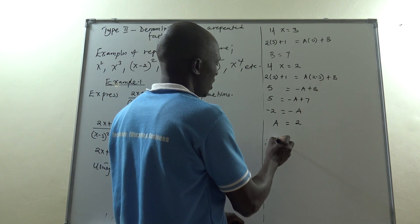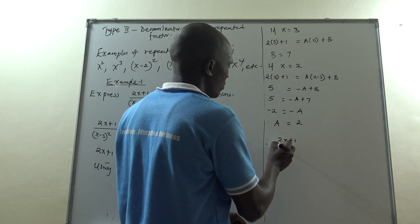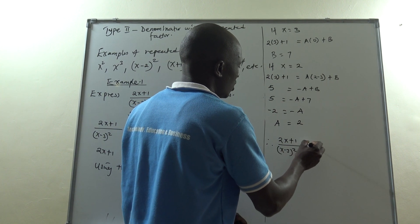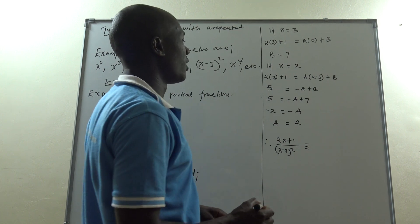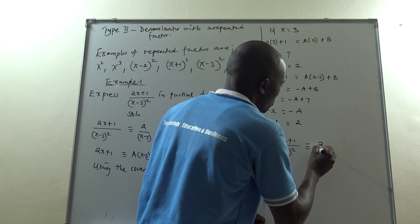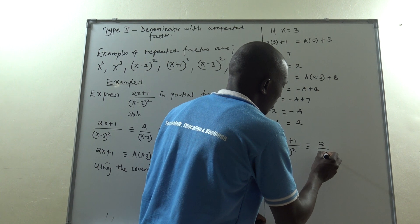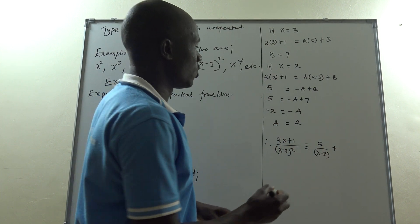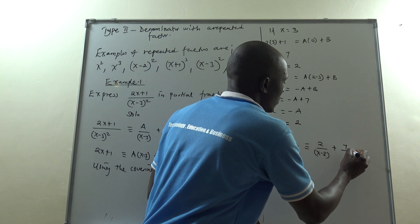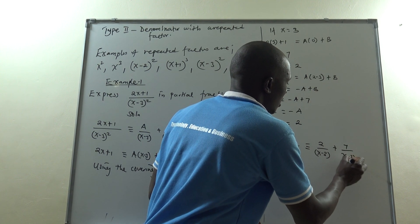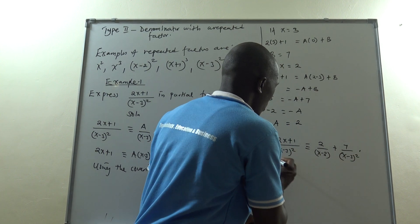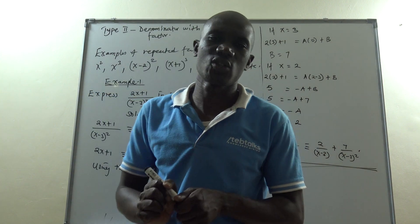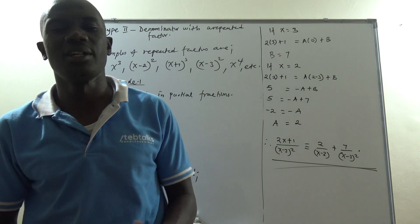So we have (2x plus 1) all over (x minus 3) squared equals 2 over (x minus 3) plus 7 over (x minus 3) squared. We have finished expressing this fraction into the required partial fractions, keeping in mind the repeated factor.